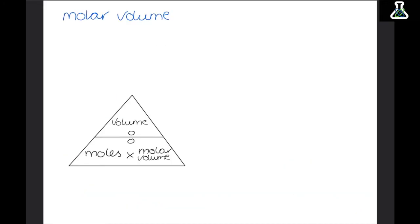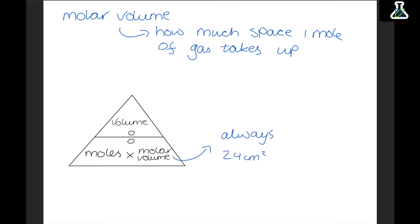Now molar volume is how much space one mole of gas takes up. So here is the equation down below. Molar volume can be found by dividing the volume of the gas by the moles. And this is always going to be 24 centimetre cubed at room temperature and pressure. So for any gas at room temperature and pressure it will take up 24 centimetre cubed.